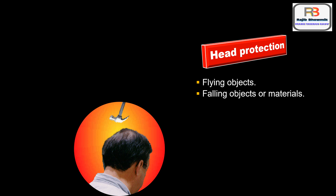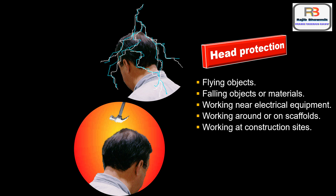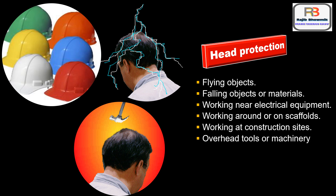Head protection is needed when employees are exposed to hazards that have potential to cause a head injury. Examples of hazards are flying objects, falling objects or materials, working near exposed energized electrical equipment, working around or on scaffolds, working at construction sites, and working around overhead tools or machinery. Various types of safety helmets are used to avoid head injury, as shown in the picture.